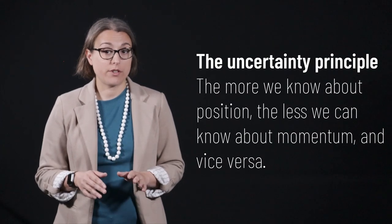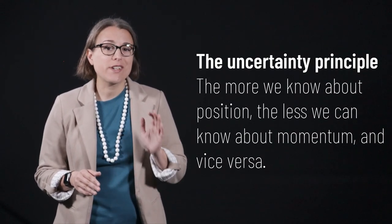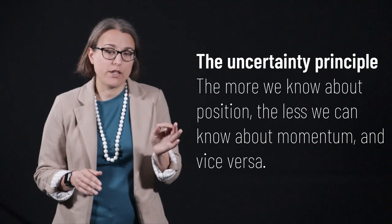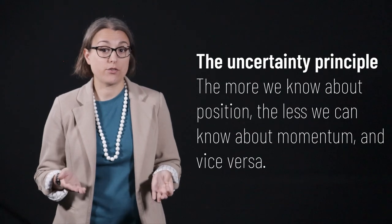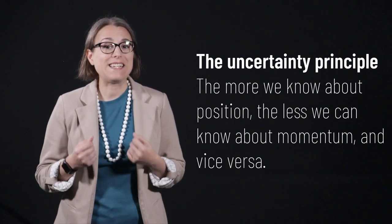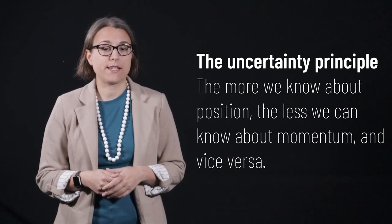If I know the position of something with a high level of accuracy, then the accuracy to which I can measure momentum will be limited. To the extreme, if I know with perfect certainty the exact location of a wave, then it is impossible to know the momentum of that wave, and vice versa. But uncertainty can never be zero for both quantities.